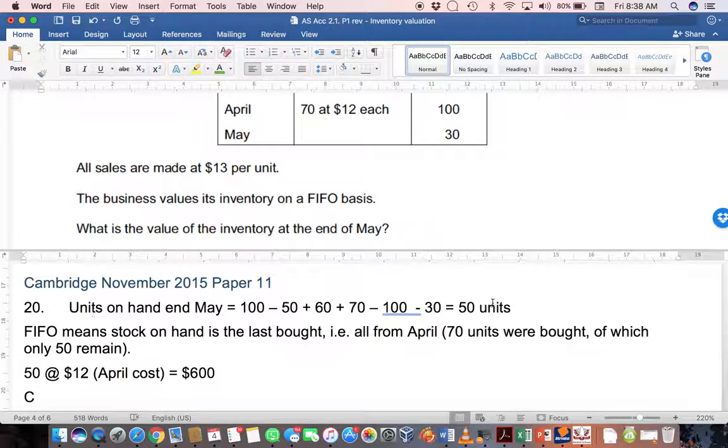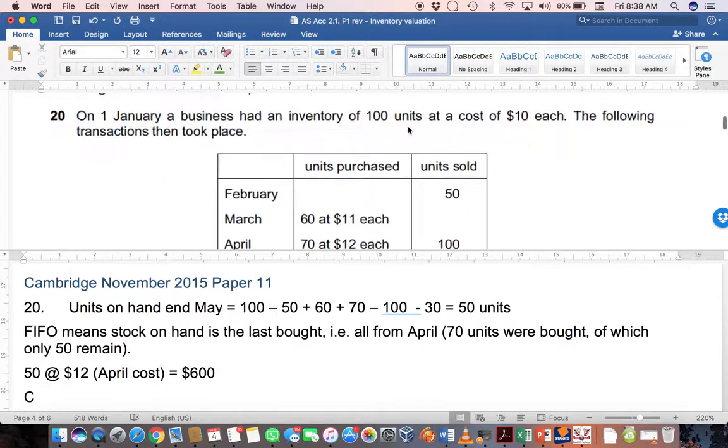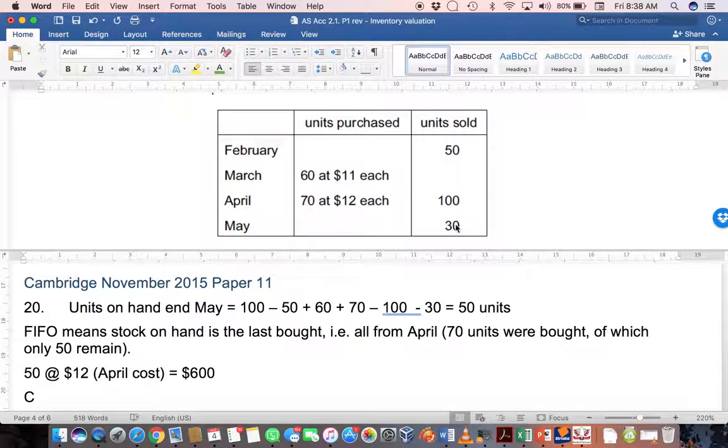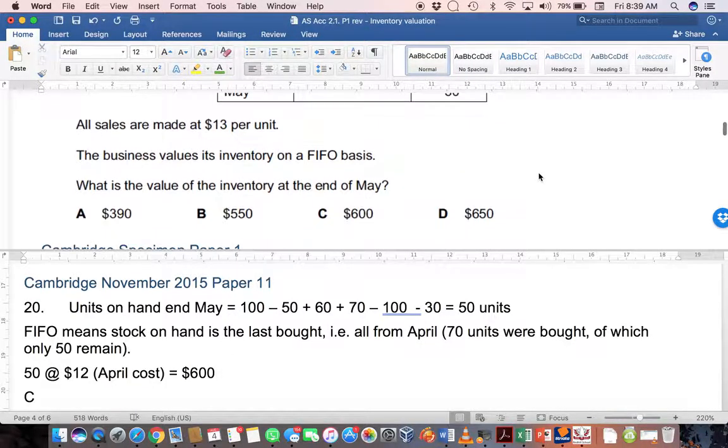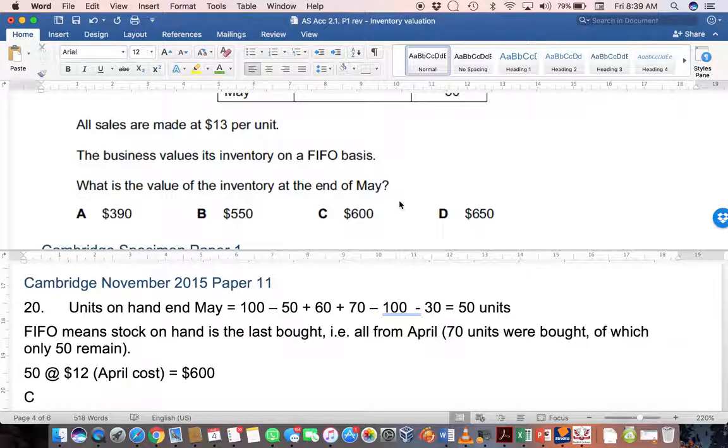First we need to work out how much we had on hand at the end of May. We'll take the 100 units at the beginning, minus 50 units sold in February, plus 60 units and 70 units that were bought, minus 100 units sold, then minus 30 units sold in May. This leaves 50 units at the end. Given that I want to go from the bottom up to find my closing inventory, I'm going to take all 50 from those 70 because there's only 50 left over. So I'll value all 50 items at $12 each. That's why I'm going to use my April cost and get $600 as the value of inventory at the end. In other words, C as my answer.